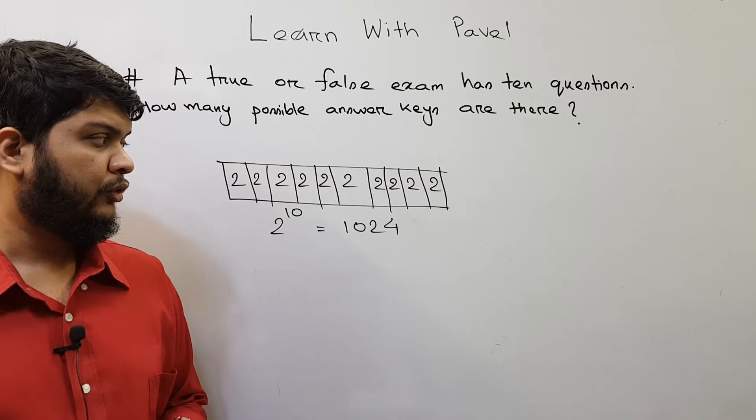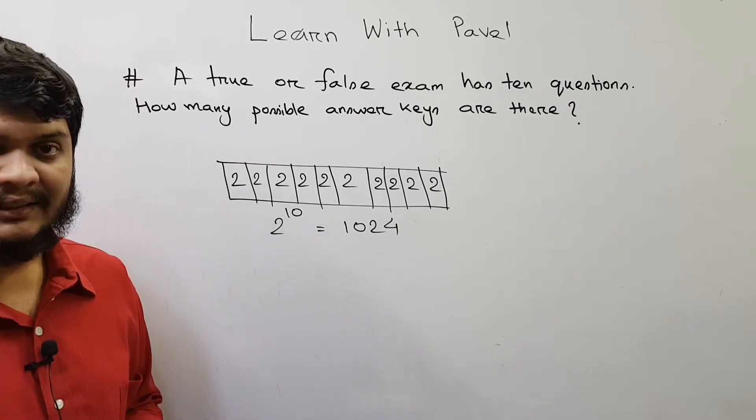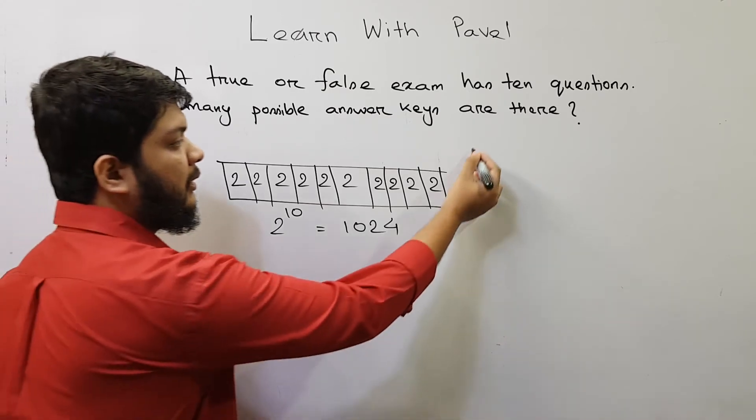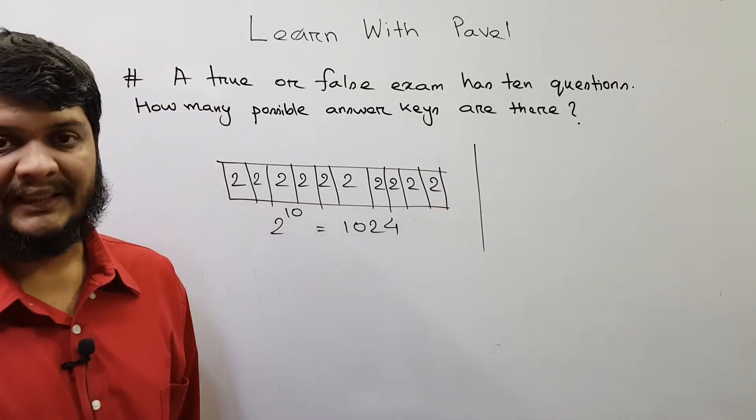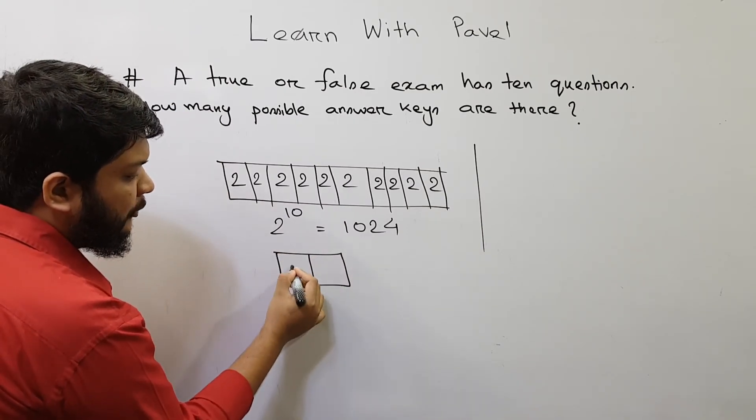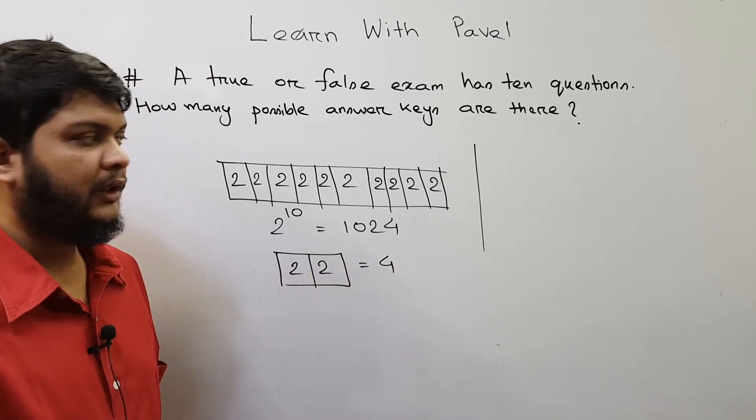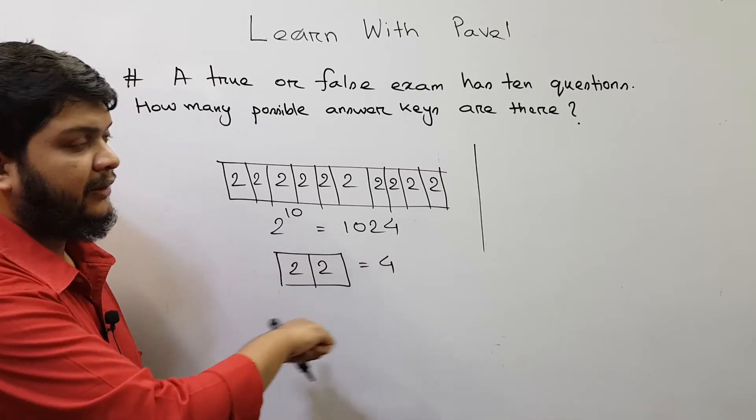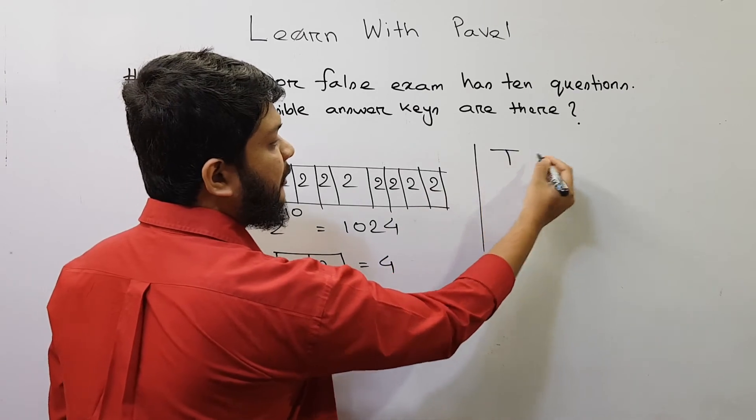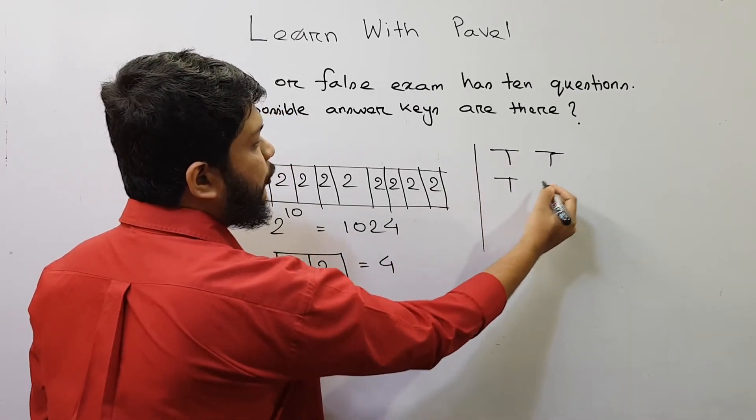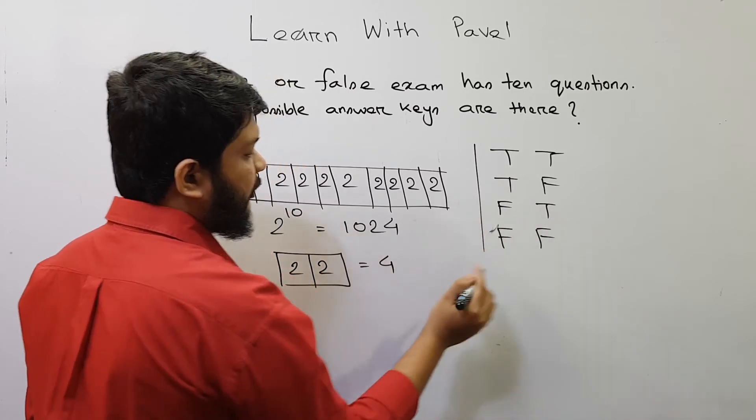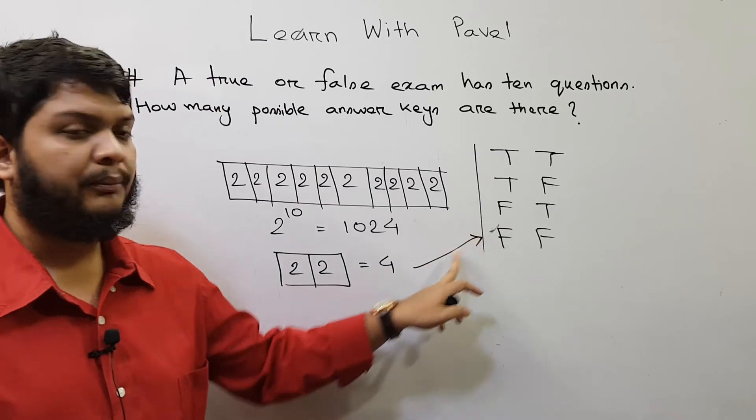For some of you who might think this is unrealistic, those who do not have the idea of multiplication principle, let me show you an example. Suppose you have two questions. Then according to this principle, how many possible answer keys are there? 2 times 2 which is equal to 4. So let me demonstrate this example in details. One of the possible answer key combinations might be both of them are true. Then true false, false true, and false false. So you see there are four possible combinations.